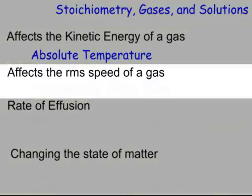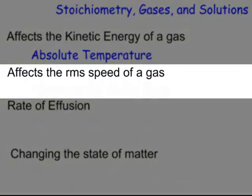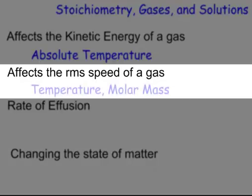But what would affect the speed of a gas, or we call that the RMS speed, the root mean squared speed of a gas? Temperature and molar mass. Greater temperature, greater speed. Greater molar mass, slower speed, right?